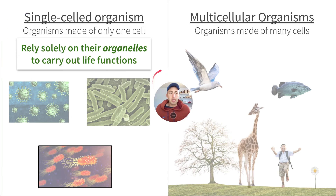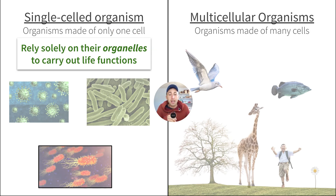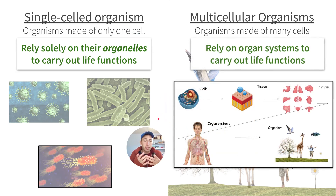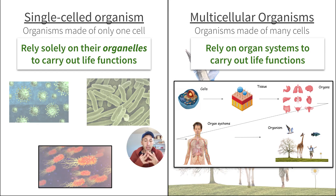There are two types of organisms: single-celled, which rely only on their organelles to carry out life functions, and multicellular organisms like us. In multicellular organisms, cells come together to make up different tissues like skin and muscle tissue. Those tissues make up different organs like the brain, kidneys, and lungs. The organs work together to make different organ systems — respiratory, digestive, immune system — and all those systems work together to make up the organism.